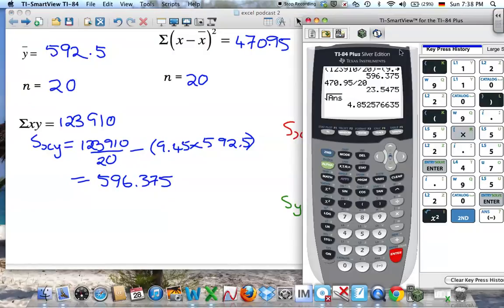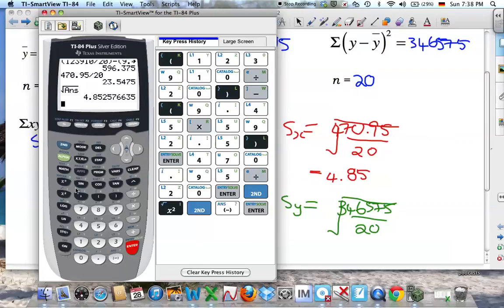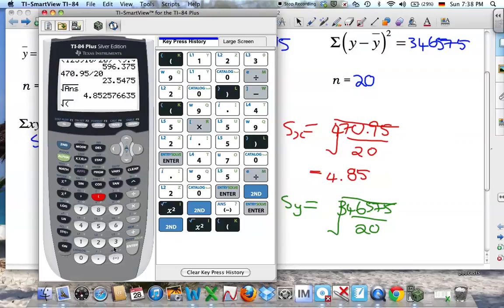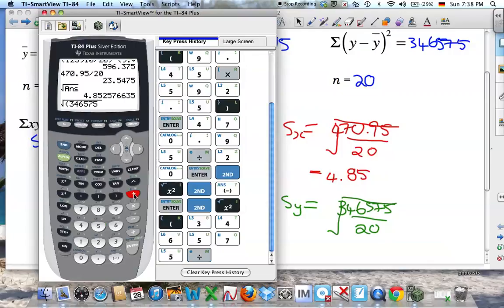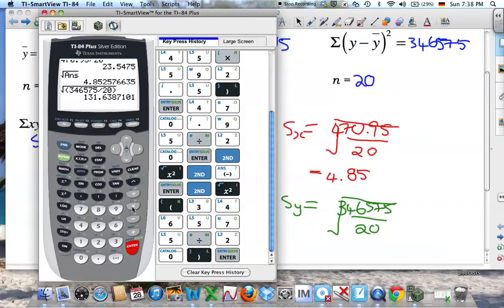And then it's just a matter of again getting the calculator. I want maybe I'll do square root first, bracket, 346,575 divided by 20, close bracket enter. So I get 131, I might do this to one decimal place, 131.6.